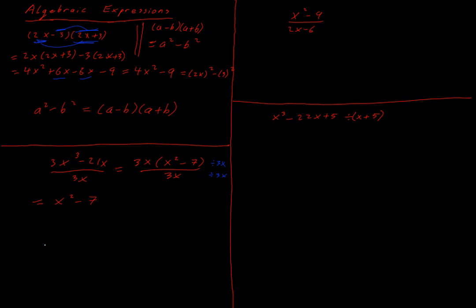Another valid way to write that problem is to split the fraction: 3x³ over 3x minus 21x over 3x, then do each division separately — there will be times when that method is more useful. Our guiding principle is 'common factor comes first': whenever we're factorizing, we always look first for a common factor across the entire line or expression.